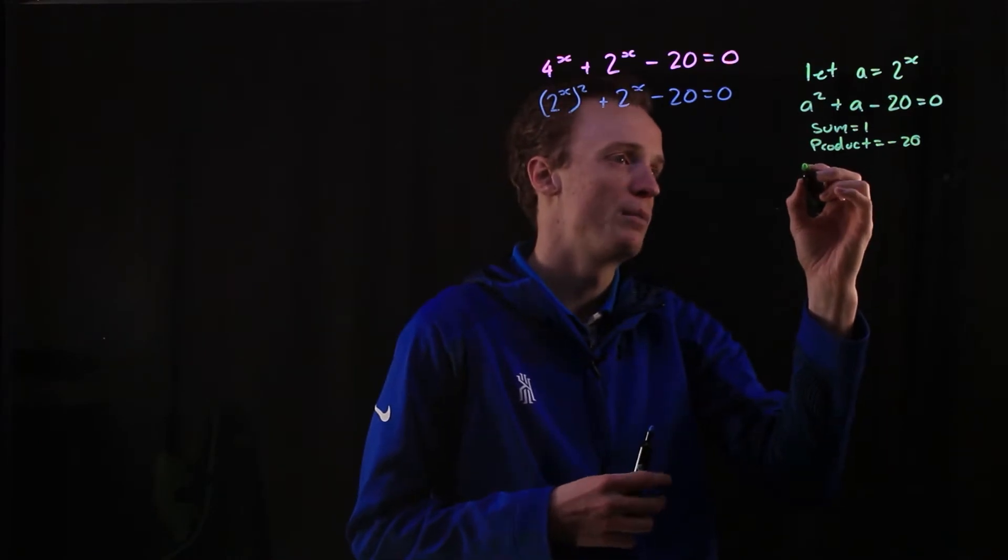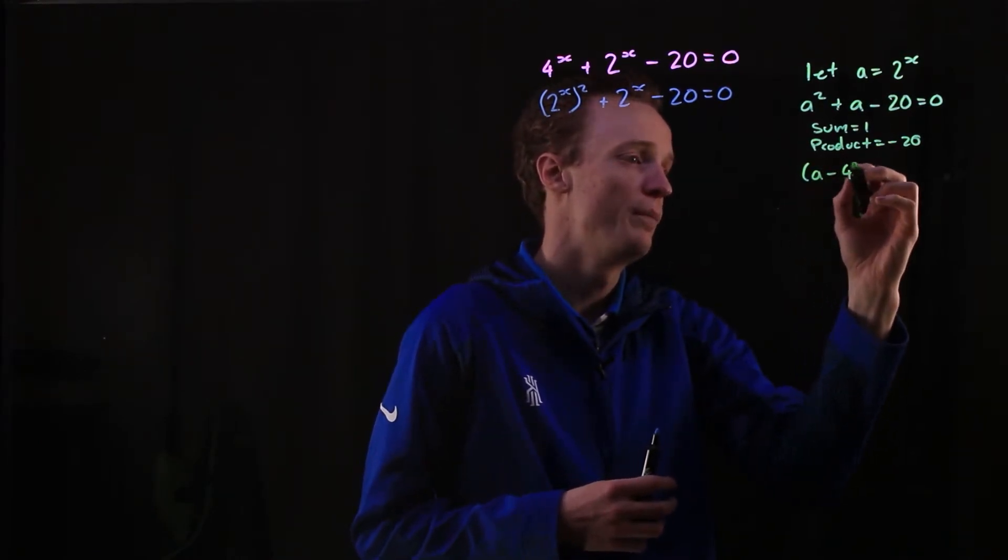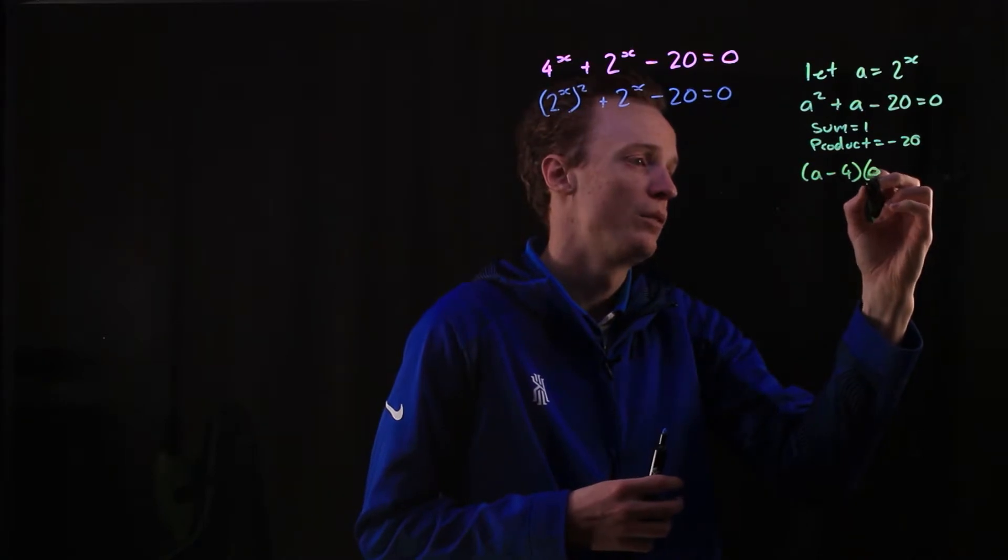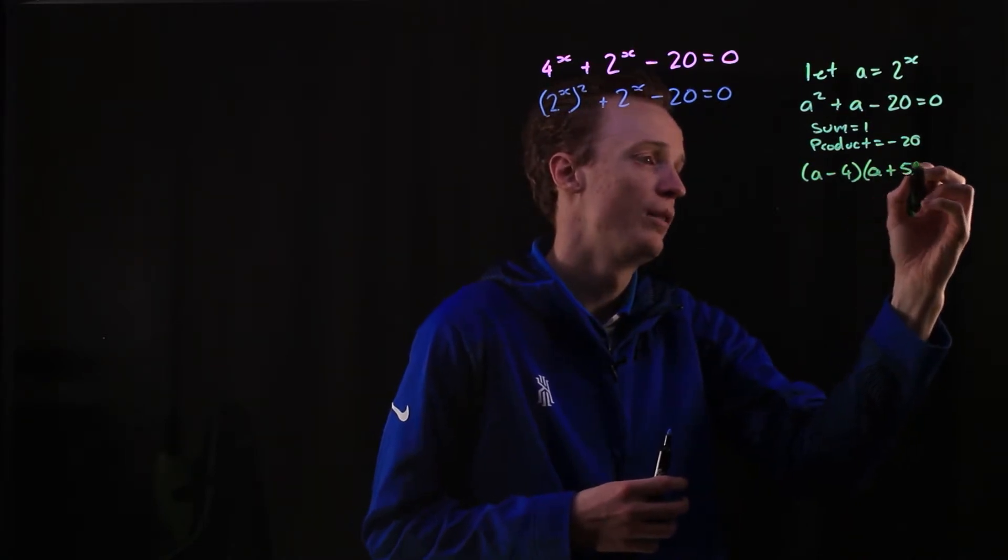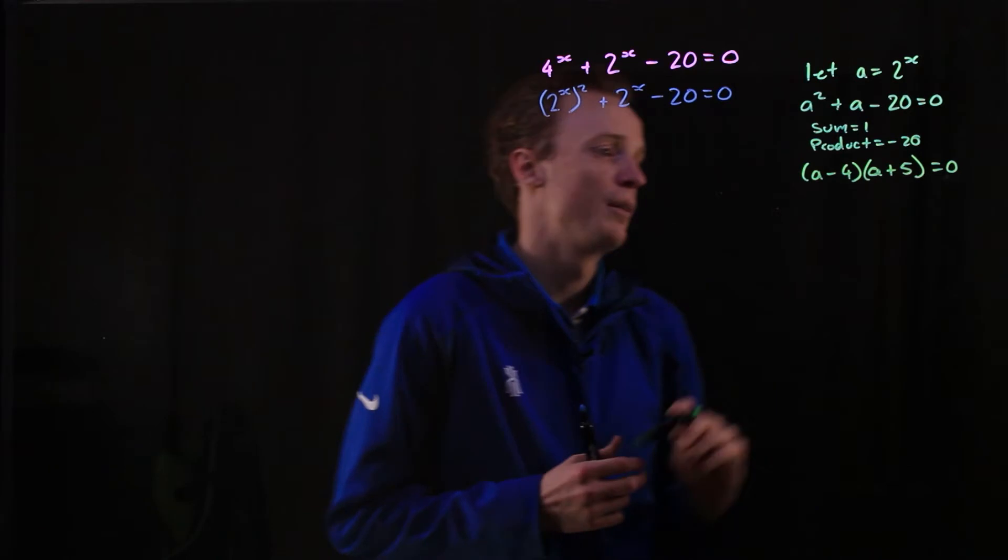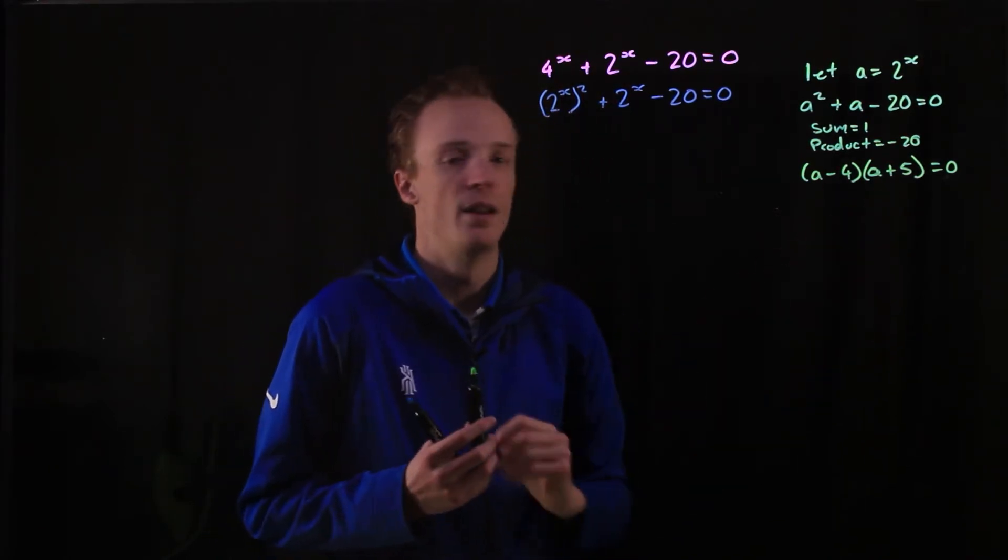Well, that would be negative 4 and positive 5. So this can be rewritten as (a - 4)(a + 5) is equal to 0. And I've factorised this left-hand side.